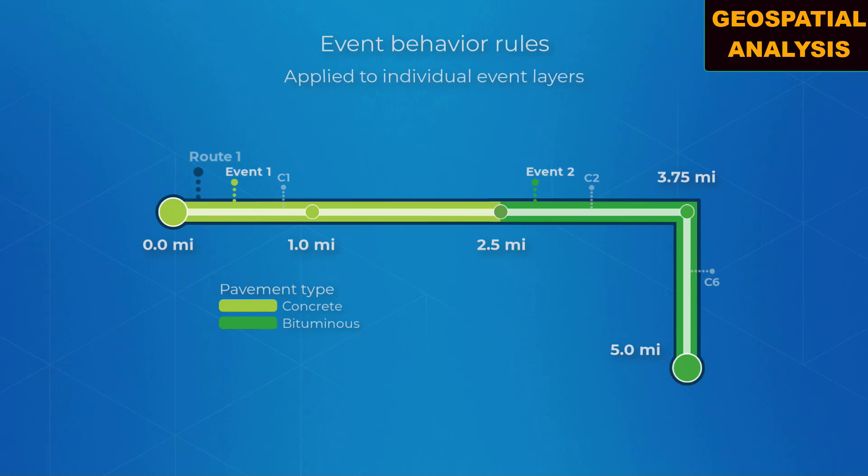Event behavior rules are applied to an individual event layer to define how event measures and shapes are updated for each type of route edit.